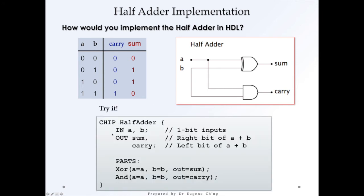So how would you implement the half adder in HDL? This is the code for the HDL — and later I'll produce videos that map code with the diagram. We have two inputs A and B, and two outputs: one is the sum, one is the carry. In the PARTS section, we need an XOR gate with A and B as inputs and out connected to sum, and an AND gate with A and B with carry as the out. This is the complete implementation in the hardware simulator for the half adder.